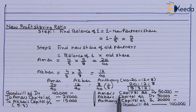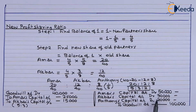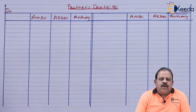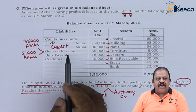The write-off entry will be: Amar's capital account debit 50,000, Akbar's capital account debit 30,000, Anthony's capital account debit 20,000 — to goodwill account 1,00,000. Let us start doing postings on the liability side.